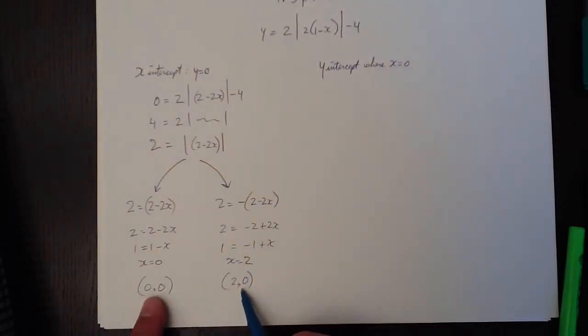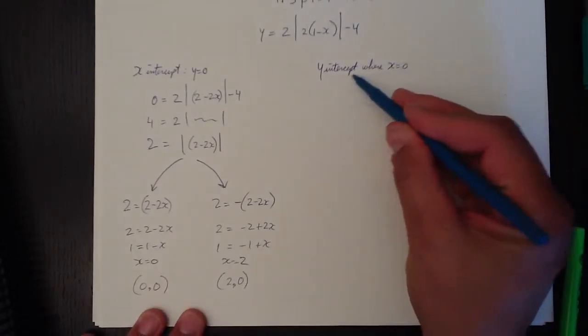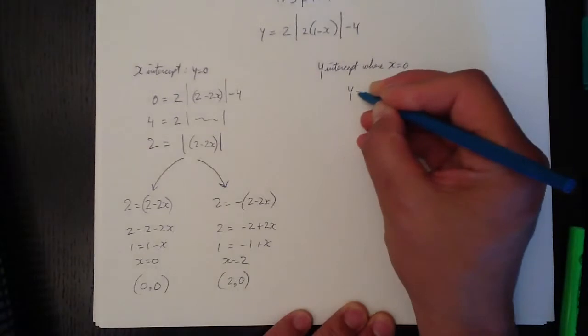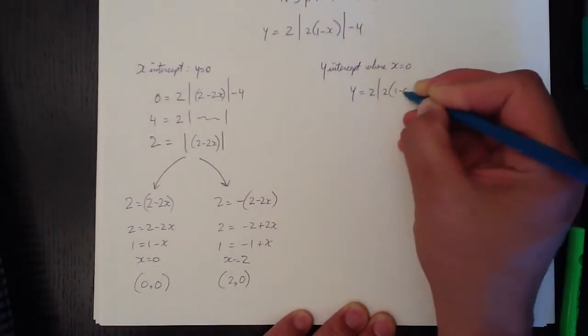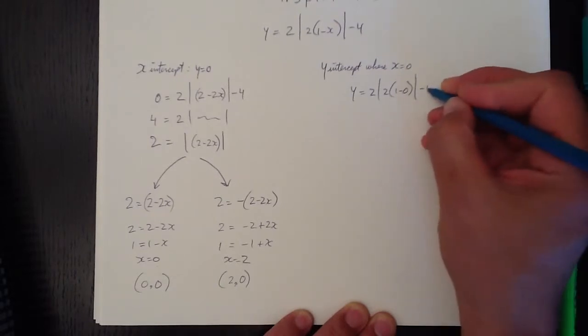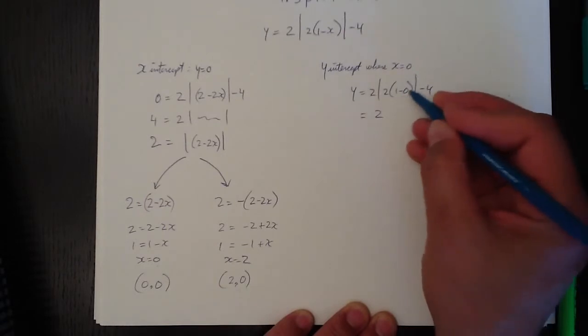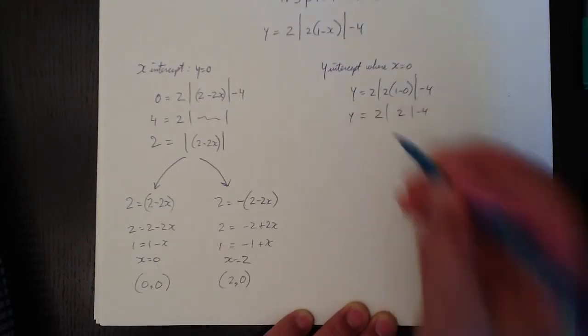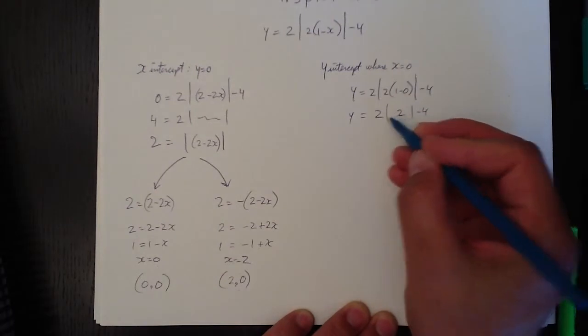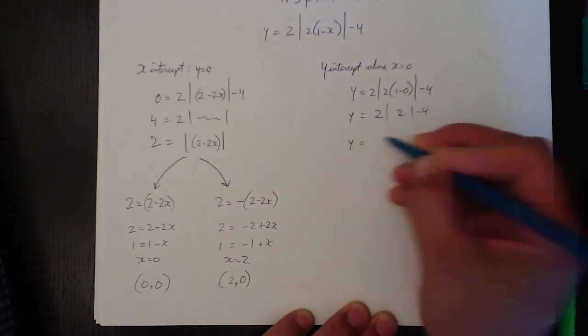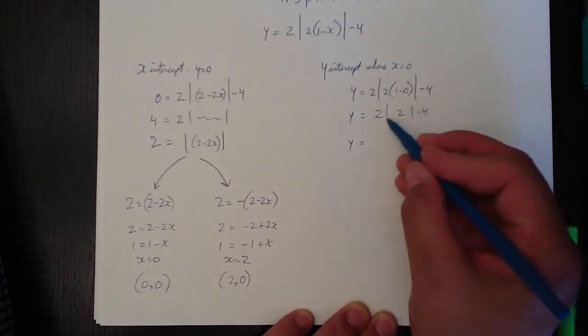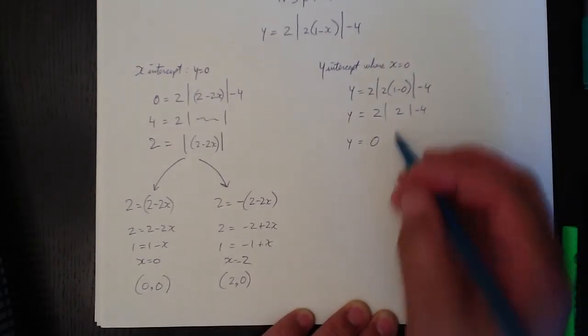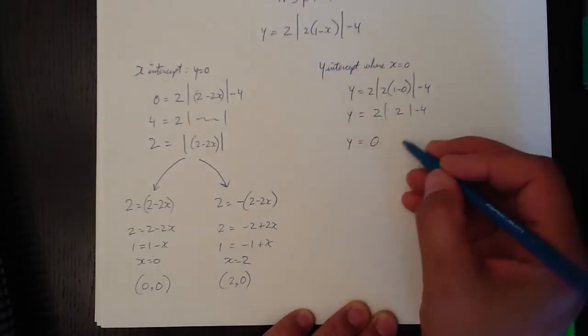When you're asked for an intercept, you have to give a coordinate, not just the x value in that coordinate. So the y-intercept is where x equals zero, moving right along. And if x equals zero, we've got y equals 2 times the absolute value of 2, 1 minus 0, minus 4, which equals 2 times the absolute value of 2 minus 4. And so that can be two different things. Y equals, well actually it can't be two different things. The absolute value of 2 is 2, so 2 times 2 is 4, 4 minus 4 is zero.